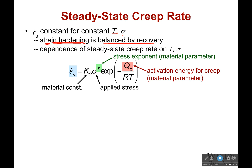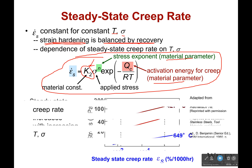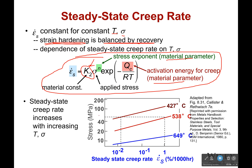There's a nice equation for the steady-state creep rate. It involves a material constant K, a stress exponent, and the activation energy for creep — so you need to know all three material parameters, and normally at least two are given and you solve for the third. The steady-state creep rate, expressed as percent per one thousand hours, increases with temperature or with stress. The higher the stress or the higher the temperature, the higher the creep rate.